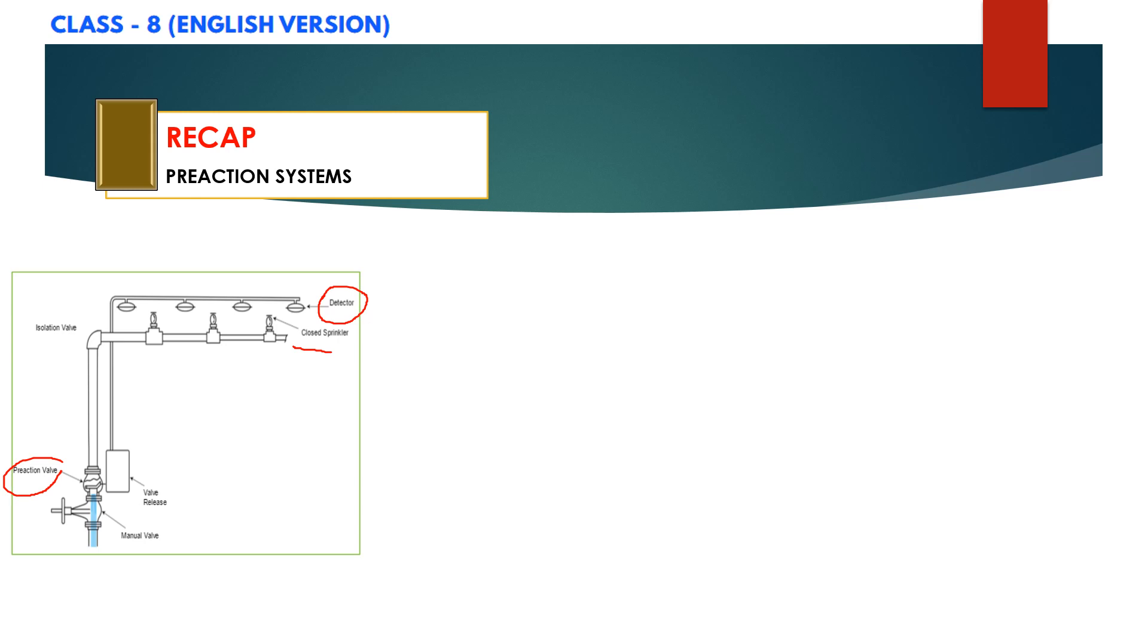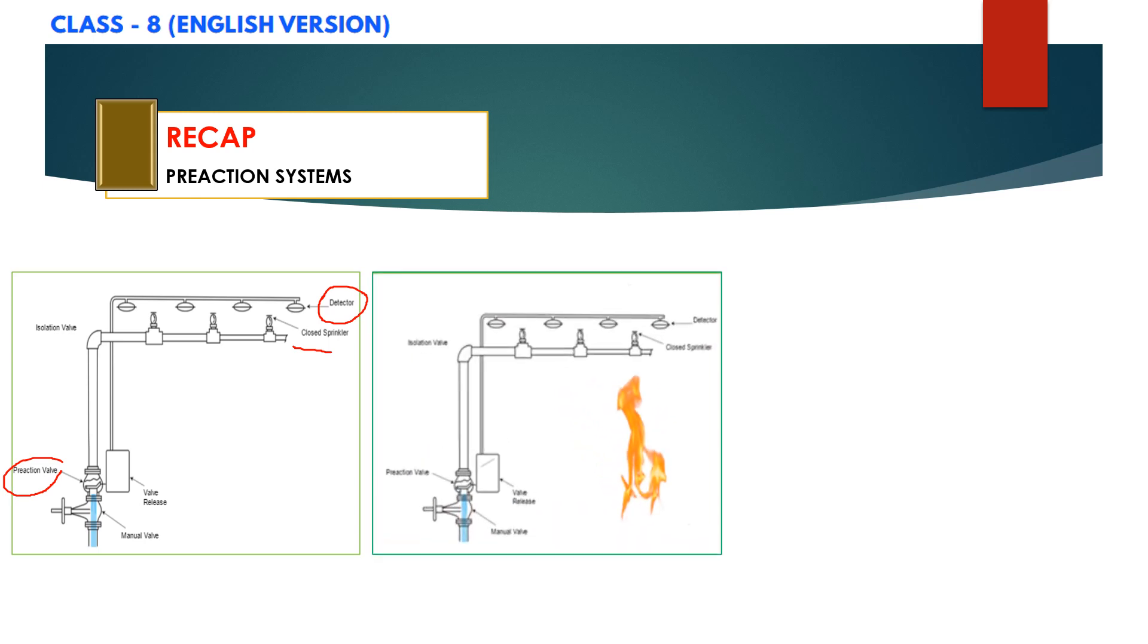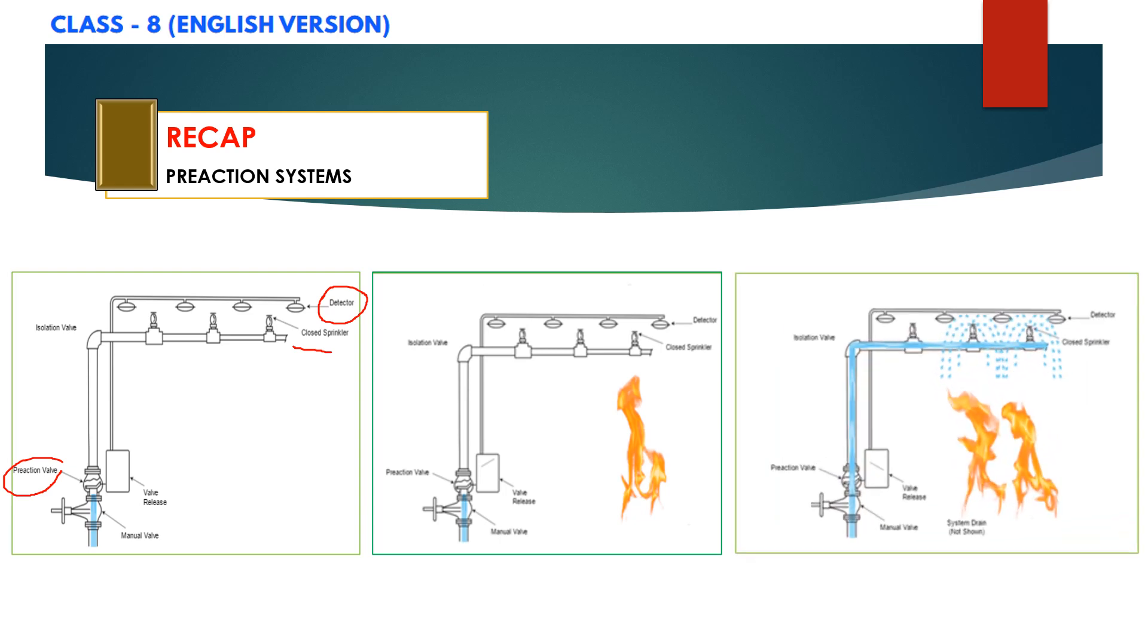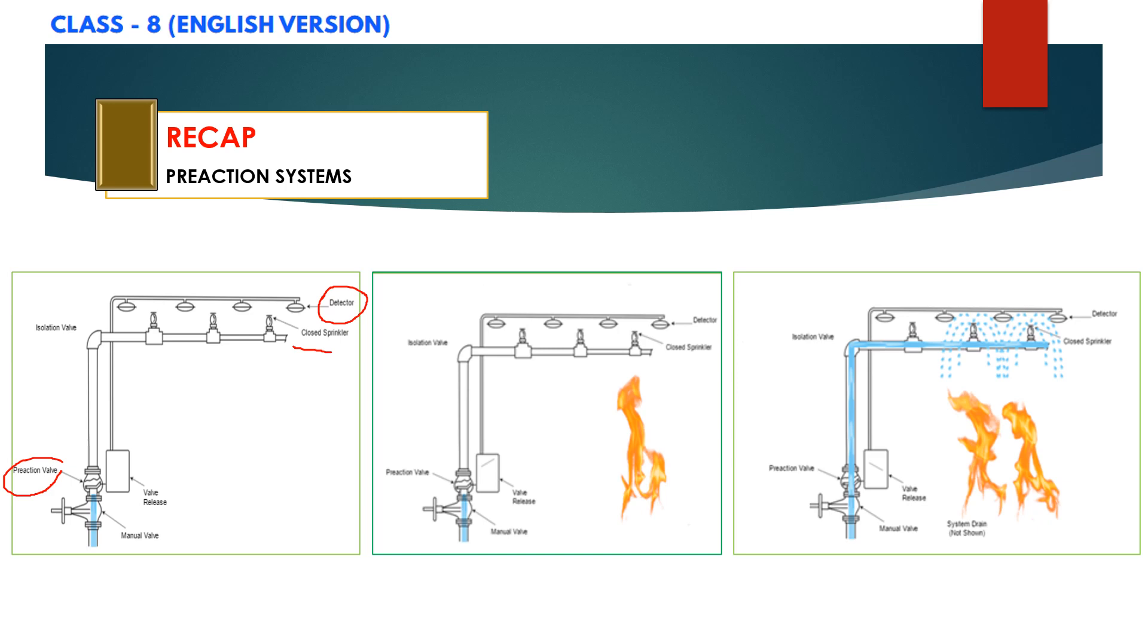All the sprinklers are normally closed and normally there is no water in the piping. When fire occurs, a supplemental detection system senses the fire and automatically opens the preaction valve. When the preaction valve opens, water will flow into the piping system. Water discharge occurs from each individual sprinkler as they fuse in response to heat.